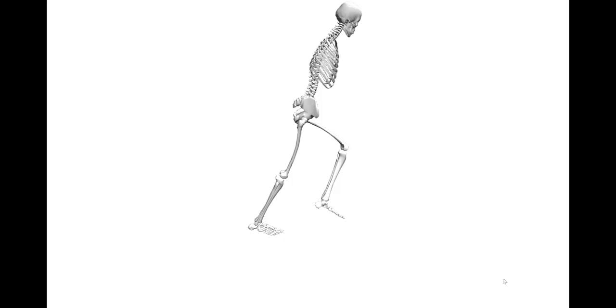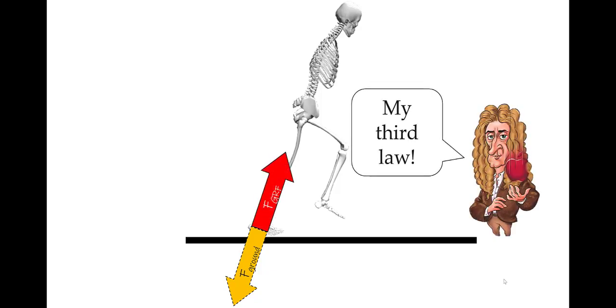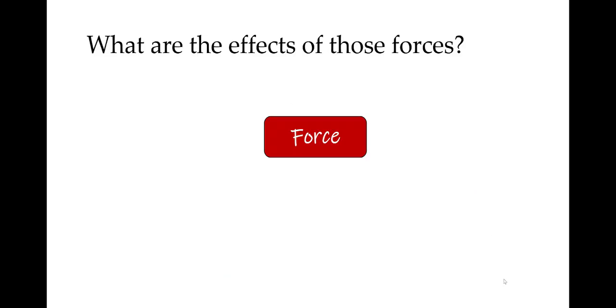Finally, we have contact forces. If you are in contact with something, you are applying a force to it. In this example, we can say that you are applying a force to the ground. Any object that you are in contact with—in this case the ground—will apply a force equal in magnitude and opposite in direction back on you. This is the ground reaction force. This is Newton's third law. Now that we understand what a force is and where forces come from, let's talk about the effects of those forces.